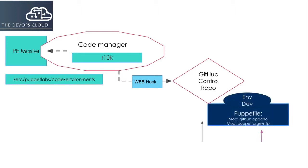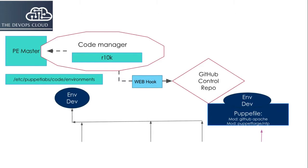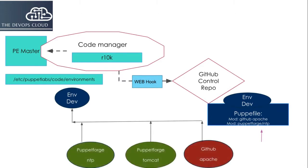So let's say we have to deploy the dev environment first. CodeManager will call GitHub for the development environment, and the Puppetfile will limit CodeManager to get only those modules which are listed in the Puppetfile. The Puppetfile specifies the modules and data that you want in each environment, so it controls the modules and data, and not everything gets installed by default. Here we will manage the NTP, Tomcat, and Apache modules through the Puppetfile in the dev environment.